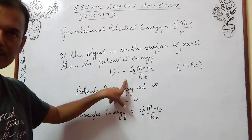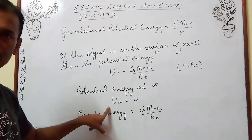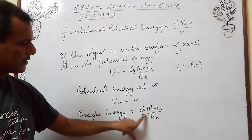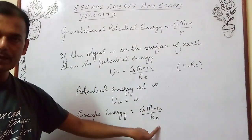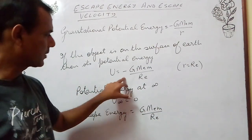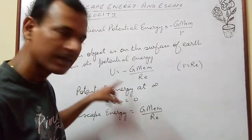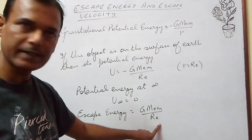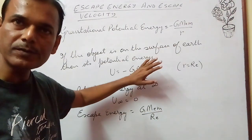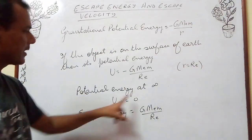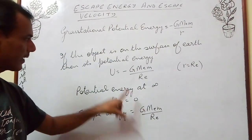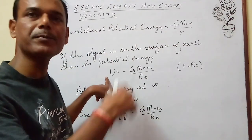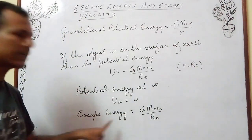The potential energy at the surface of earth is −G·Me·m/Re, and at infinity it is 0. If this object on the surface of earth is given energy equal to G·Me·m/Re, this total energy will become 0. Since potential energy at infinity is 0, by getting this much energy, the object on the surface of earth will escape to infinity. Therefore this energy is called escape energy.